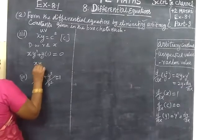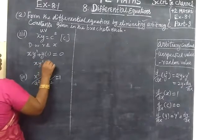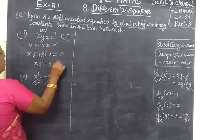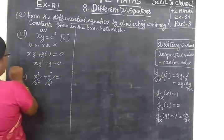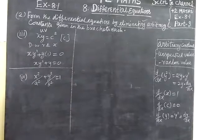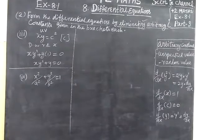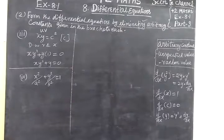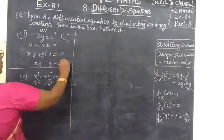C is eliminated, so the answer is: xy' plus y equal to 0. So for the third sum, the answer is xy' plus y equal to 0. This one is correct.